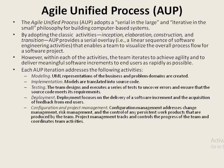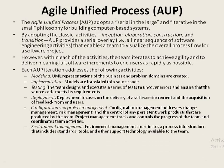Configuration and project management come next. Configuration management addresses change management, risk management, and the control of any persistent work products produced by the team. Project management tracks and controls the progress of the team and coordinates team activities. Environment management coordinates a process infrastructure that includes standards, tools, and other support technologies available to the team. These are the activities addressed during each AUP iteration. That's all about Agile Unified Process.